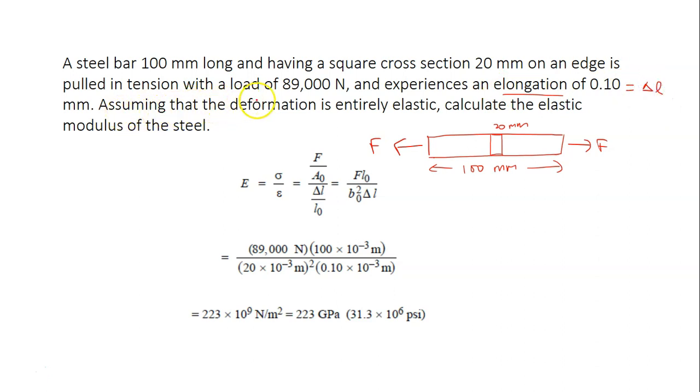So when you see elongation, automatically you know this is delta L. Assuming that the deformation is entirely elastic, so definitely you can use Hooke's Law. In which your stress equals to the Young modulus and the strain. Calculate the elastic modulus of the steel.